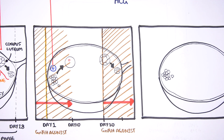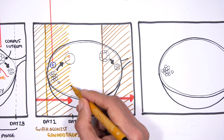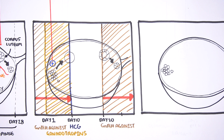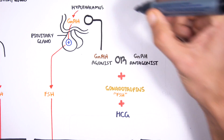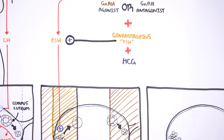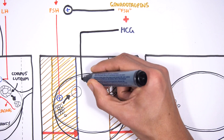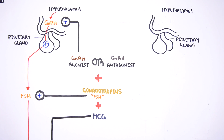At day 1 of the menstrual cycle, gonadotropins are introduced to stimulate follicular development. When ultrasound monitoring indicates that the eggs are mature, human chorionic gonadotropin is injected to induce final follicle maturation and development, and subsequently ovulation, at about day 10. Gonadotropin-releasing hormone agonists stimulate GnRH activity; gonadotropins mimic follicle-stimulating hormone, stimulating follicle development; and human chorionic gonadotropin stimulates the final follicle development.